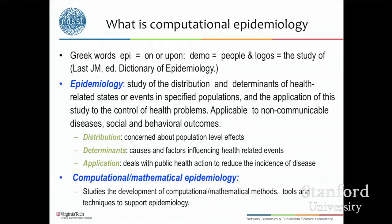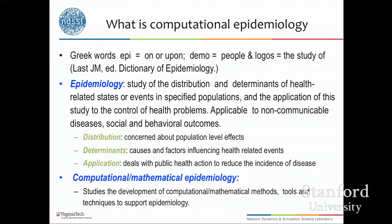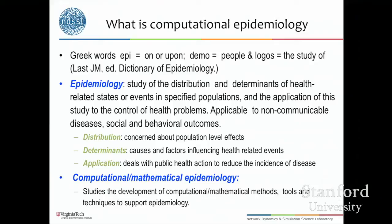Let me start by defining some basic terms. Epidemics is a situation where the number of incidents — the number of folks who are falling sick — in a community or region is substantially higher than what is typically observed. The definition itself is a relative term. Ebola is now viewed as an epidemic because the number of cases were very small compared to what we have seen so far. The term epidemiology comes from Greek words 'epi' and 'demos,' and basically deals with the study of the distribution and determinants of health-related states, and tries to find ways to control health problems.